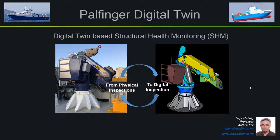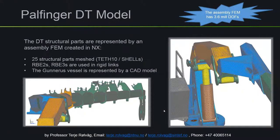For example, you can output strain time histories, stresses, loads, and lots of other data from both the physical and the digital twin. Step one in making a digital twin is to create a CAD model. We received a CAD model from Palfinger and meshed it in NX, using 25 structural parts to represent the structures in the crane. We meshed each with hex and shell elements, and used RBE2s and RBE3s to connect the solid nodes to the joint nodes. The Gunnerys vessel was represented by a CAD model imported into Fedem for display purposes, and the complete assembly FEM had approximately 3.6 million degrees of freedom.